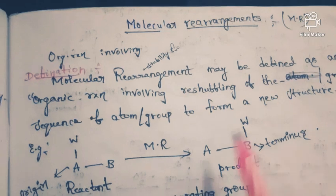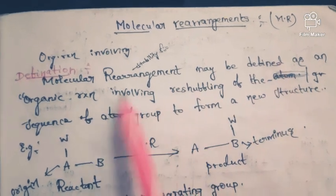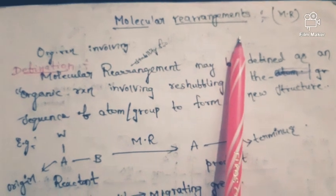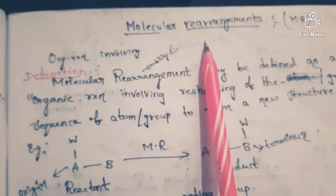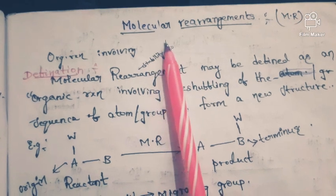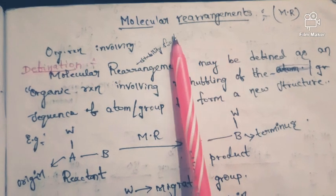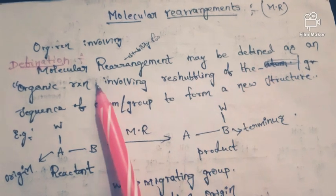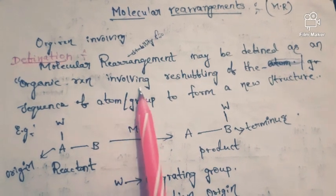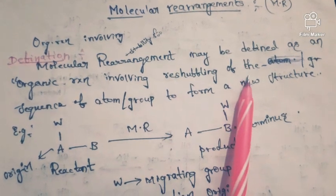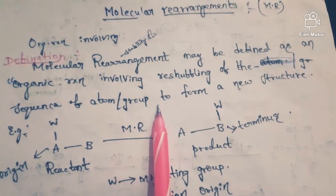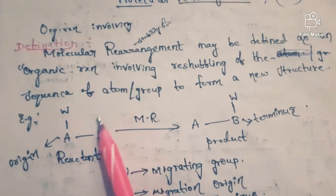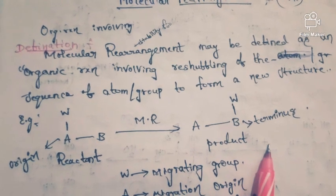First, molecular rearrangements. We should know the definition for molecular rearrangement. The name itself indicates that the molecule gets rearranged. Molecular rearrangement may be defined as an organic reaction involving reshuffling of the sequence of atom or group of atoms to form a new structure. If you see the example, then you can easily understand this.